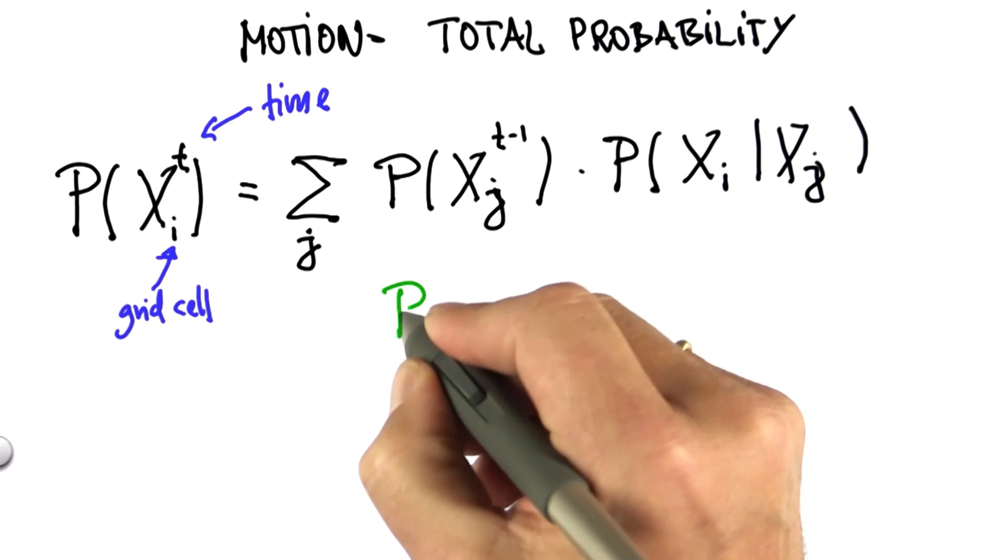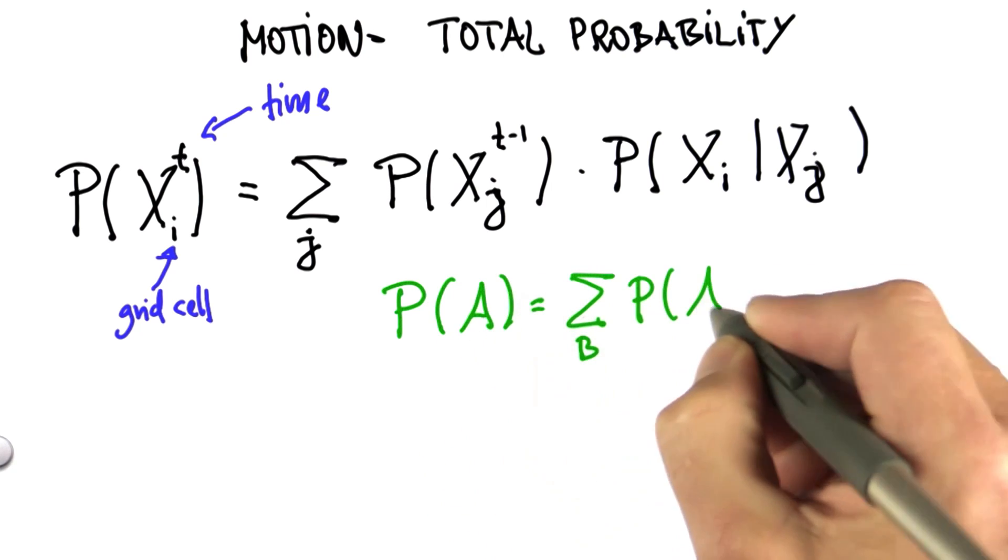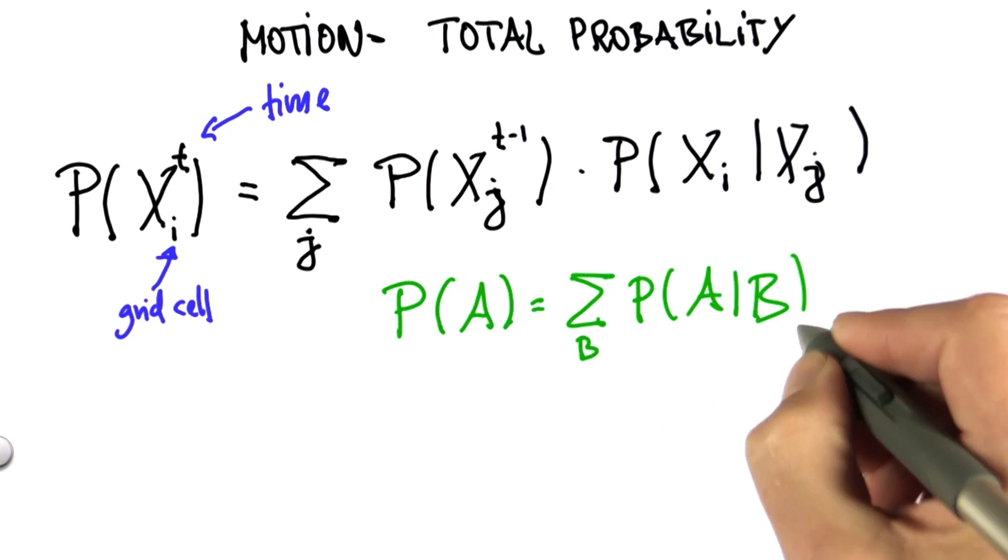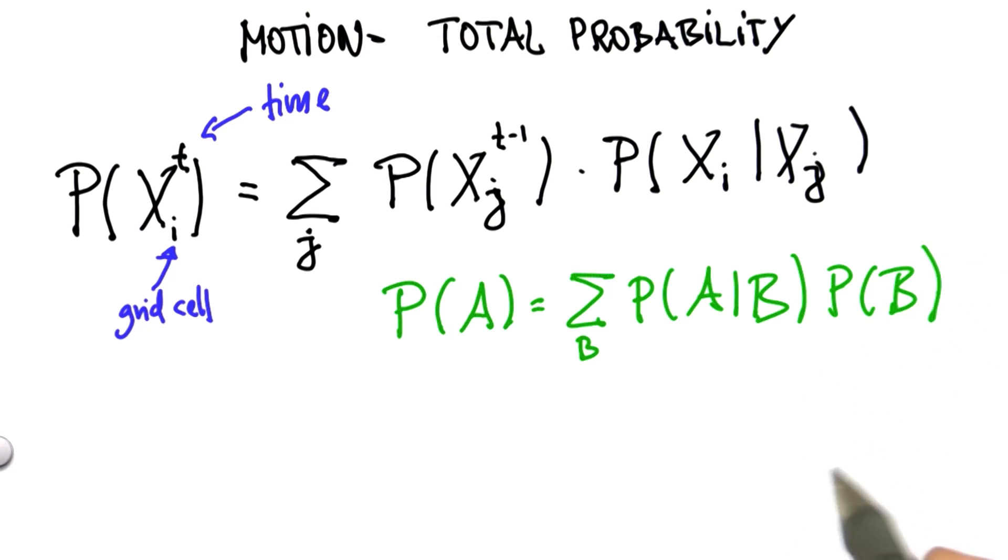Now, in probability terms, people often write it as follows: p of a equals sum of all b, p of a given b times p of b. This is just the way you'd find it in textbooks.